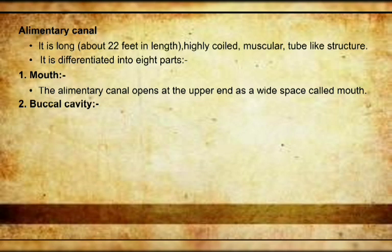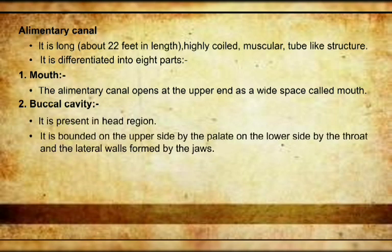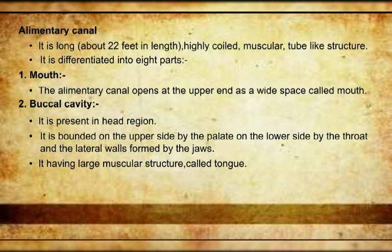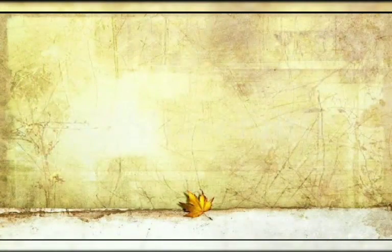Inside the buccal cavity, a muscular structure is present called the tongue. On the tongue there are many taste buds. In our buccal cavity, teeth are present with different types and characters. The palate — soft palate and hard palate — and the muscular structure is the tongue, with taste buds in the jaw teeth region.